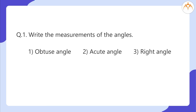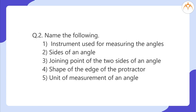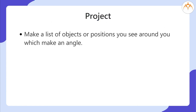Exercise. Write the measurements of these angles: 1. Obtuse angle. 2. Acute angle. 3. Right angle. Name the following: 1. An instrument used for measuring angles. 2. Sides of an angle. 3. The joining point of the two sides of an angle. 4. The shape of the edge of a protractor. 5. The unit of measurement of an angle. Project: Make a list of objects or positions you see around you which make an angle.